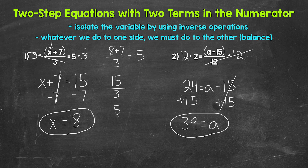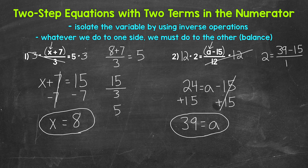That's our solution. We can check it by plugging 39 in for a: 2 equals 39 minus 15 divided by 12. Starting with the numerator, 39 minus 15 gives us 24. Then 24 divided by 12 gives us 2. So we are correct — a equals 39.